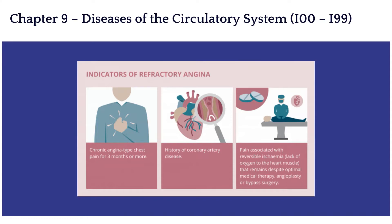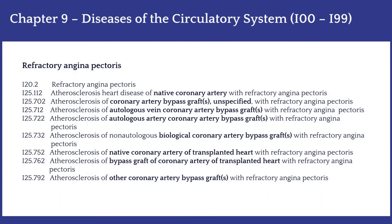The next important chapter that received updates for financial year 2023 is Chapter 9, Diseases of the Circulatory System. The first update is for codes related to refractory angina pectoris, a chronic angina that does not respond to medical or other interventional therapy. Nine codes have been added specific to refractory angina pectoris. Note that all of these codes are classified as CC conditions and may affect DRG selection. Code I20.2 is refractory angina pectoris, while the other eight codes are specific to atherosclerosis codes of coronary arteries, depending on whether it is a native coronary artery or a bypassed graft.